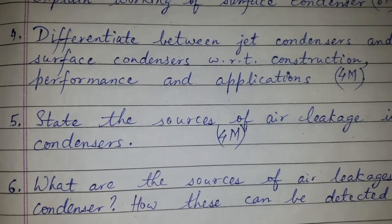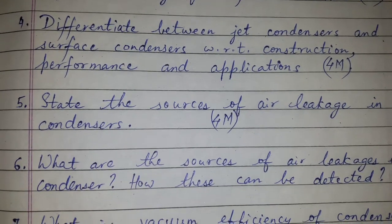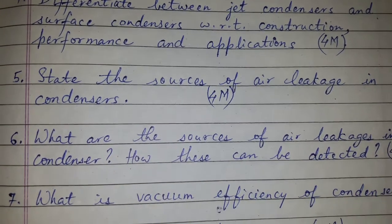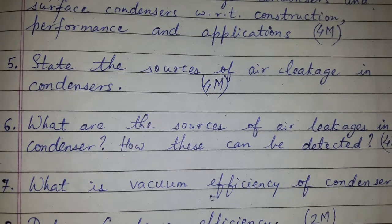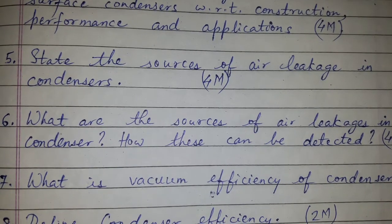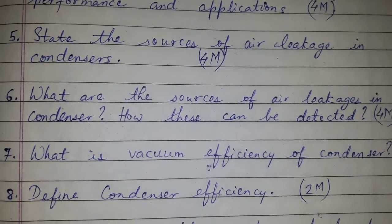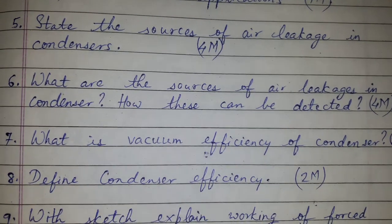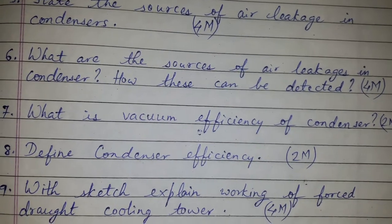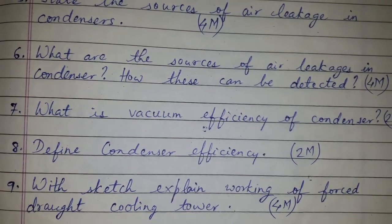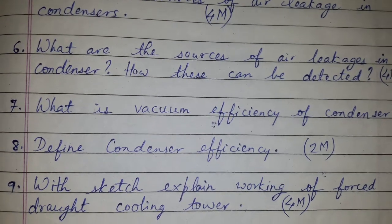State the sources of air leakage in condenser for 4 marks. What are the sources of air leakage in condenser and how these can be detected for 4 marks. What is vacuum efficiency of condenser for 2 marks. Define condenser efficiency for 2 marks.